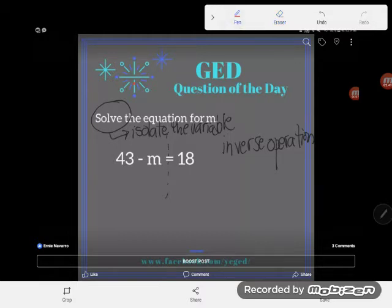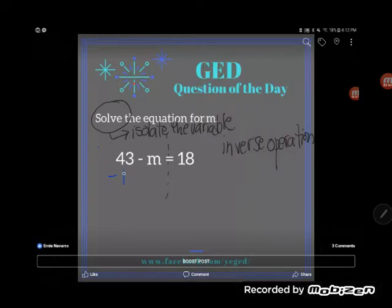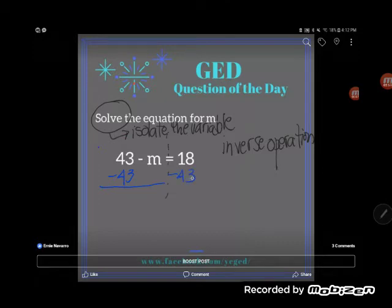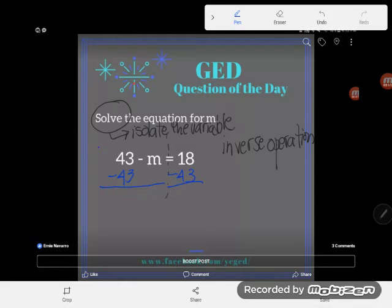Your goal is to get rid of the 43. It is a term adding or subtracting, so you want it to zero out. How can I take 43 and make it zero out? I'm going to have to subtract 43.